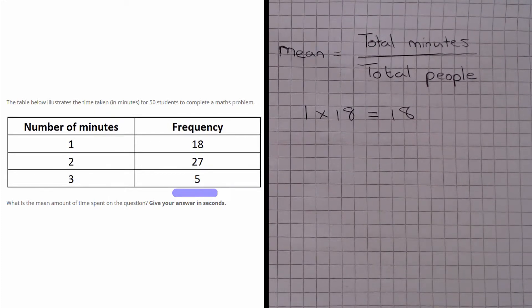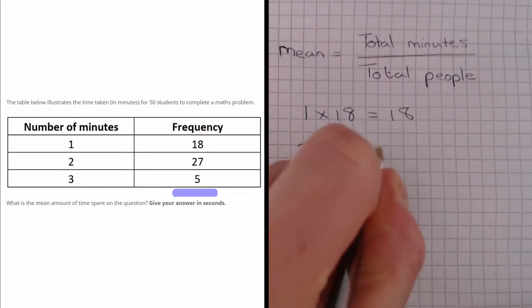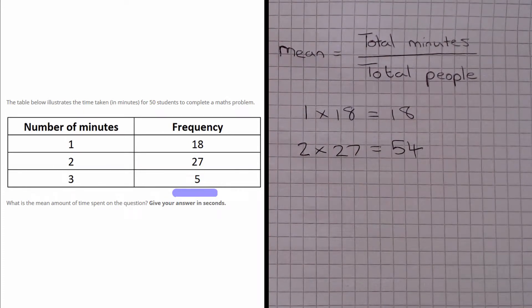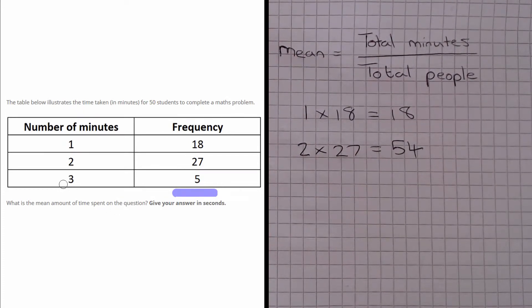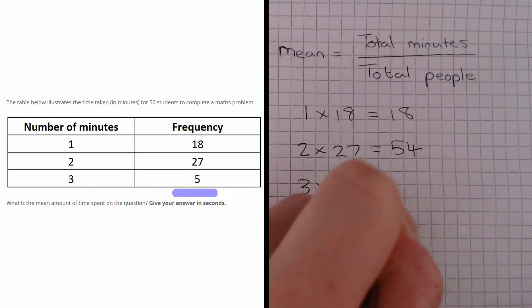And in the next row, if we had that 27 people spent 2 minutes, then we have 2 times 27 equals 54 minutes there in total. And if we look at the last row, if 5 people spent 3 minutes, then we have a total of 3 times 5, which equals 15 minutes there.